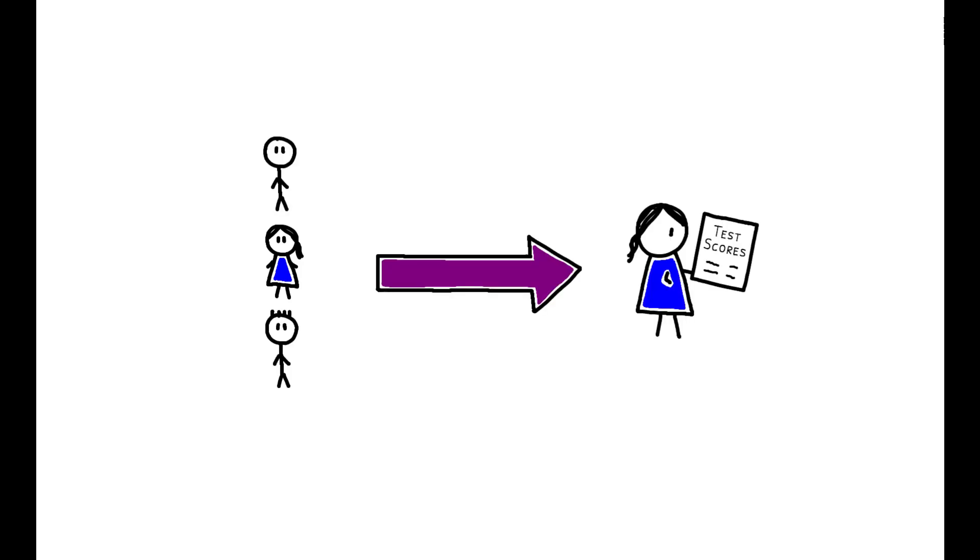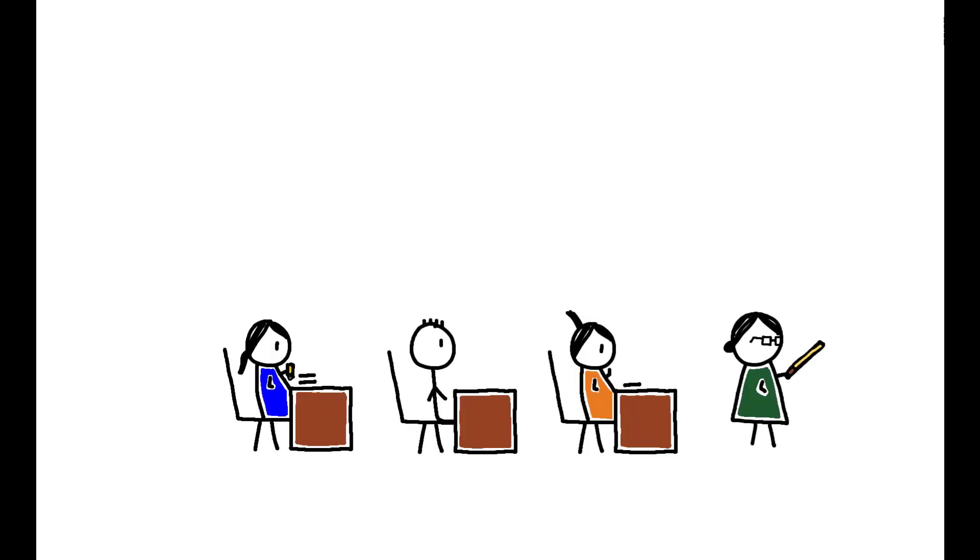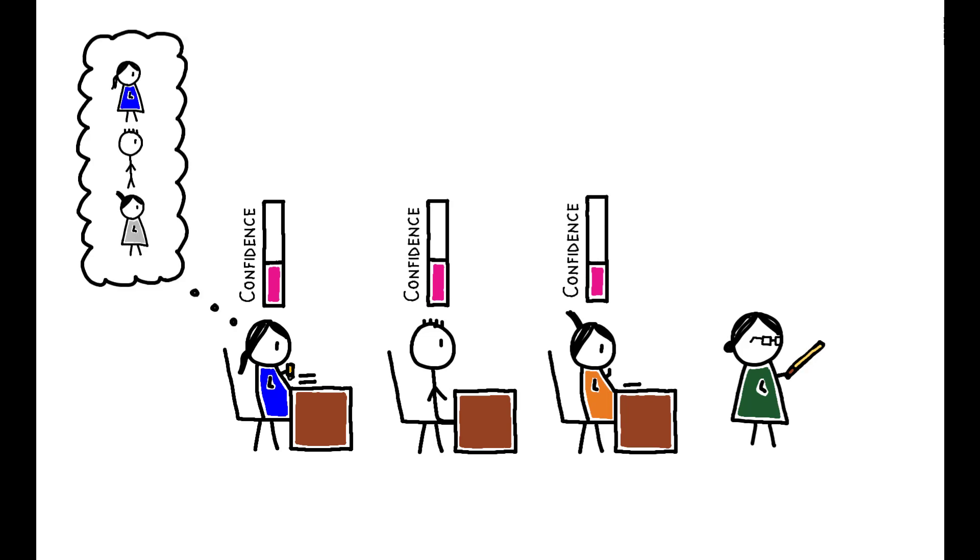And so, this paper finds that after controlling for cardinal achievement, a student's ordinal rank affects their future performance. Evidence from survey data suggests this is driven by student confidence. Being highly ranked among peers increases a student's confidence, thereby improving their performance.